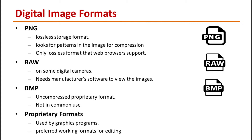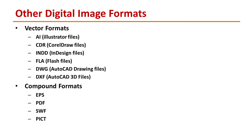If you want to display a photograph without loss on the web, PNG can be a good choice. RAW is an image output option available on some digital cameras, requiring the manufacturer's software to view images. BMP is an uncompressed proprietary format invented by Microsoft. PSD and PSP are proprietary formats used by graphics programs — Photoshop files use the PSD extension, while Paint Shop Pro files use PSP. You should save your final result in TIFF, PNG, or JPG format. There are also vector formats such as AI, CDR, INDD, FLA, DWG, DXF, and compound formats like EPS, PDF, SWF, and PICT.